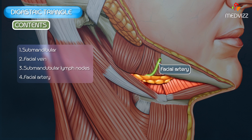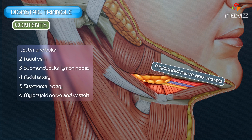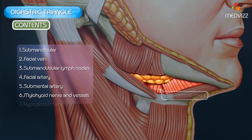Also present are the submental artery, the mylohyoid nerve and vessels, and the hypoglossal nerve. Other relations will be studied in detail when we talk about the submandibular region.